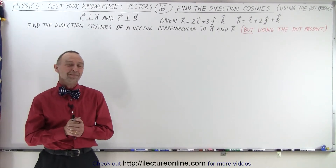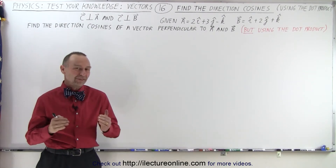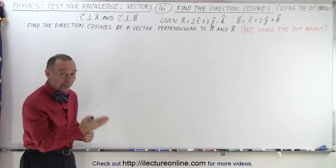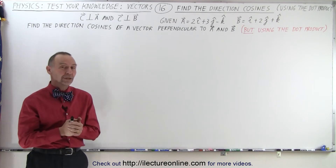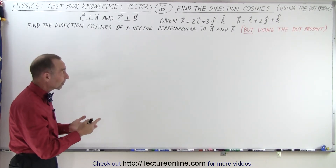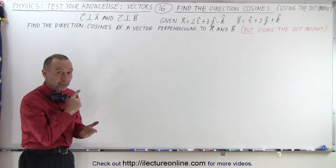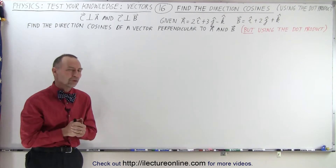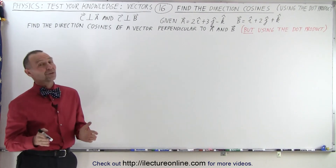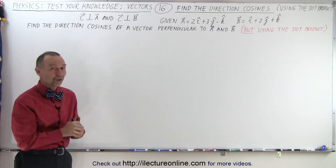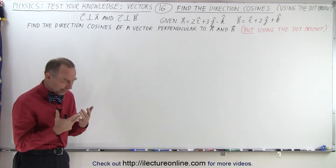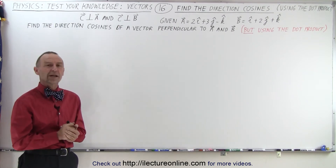Welcome to iLecterOnline. Here we have the same two vectors as we did in the previous video. We're trying to find the direction cosines of a vector perpendicular to those two vectors, but we're not allowed to use the cross product — we're supposed to use the dot product. So we have to come up with a different strategy.